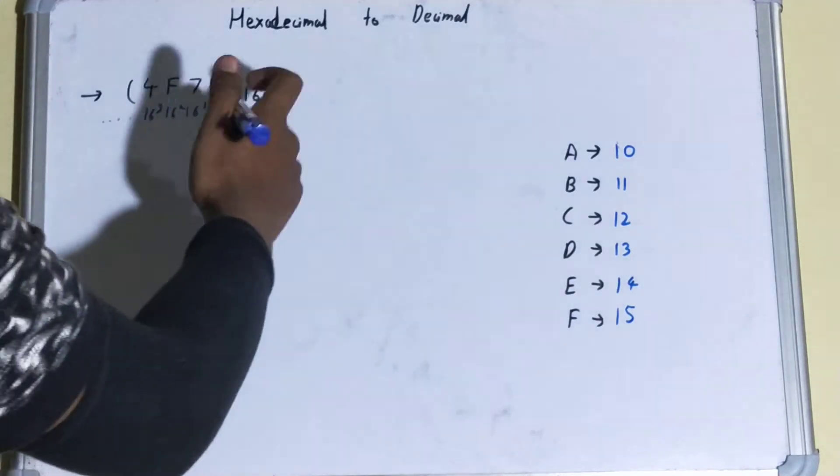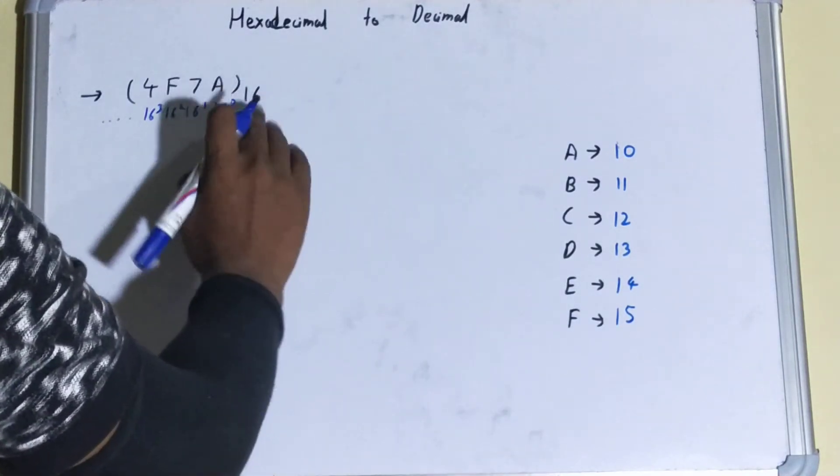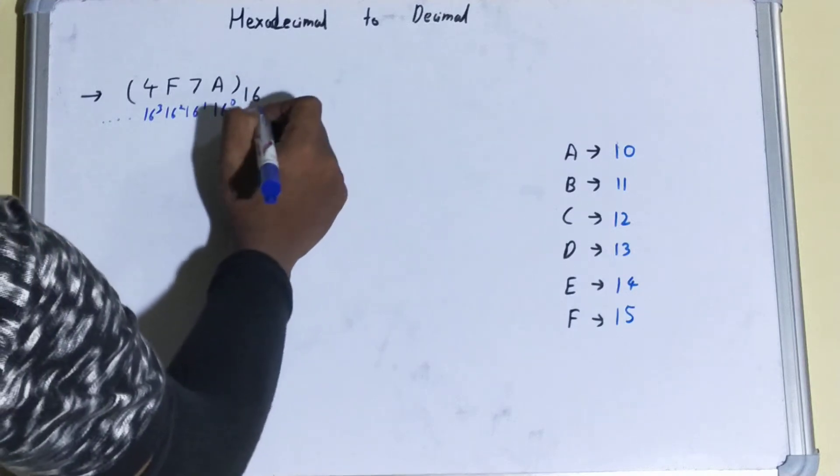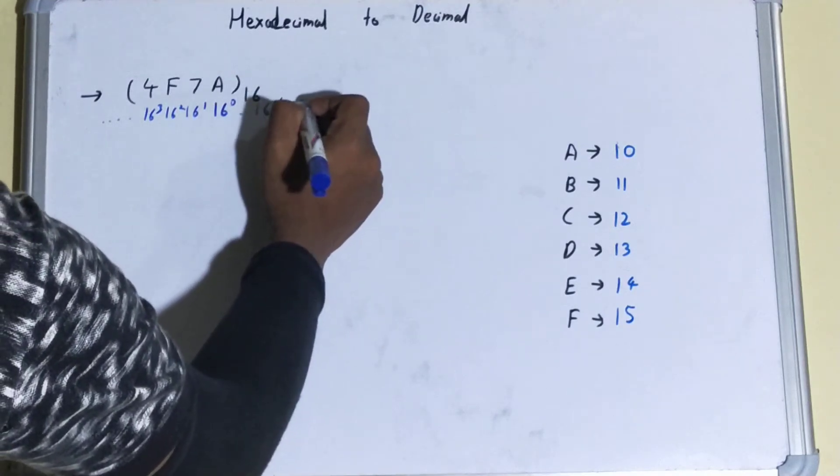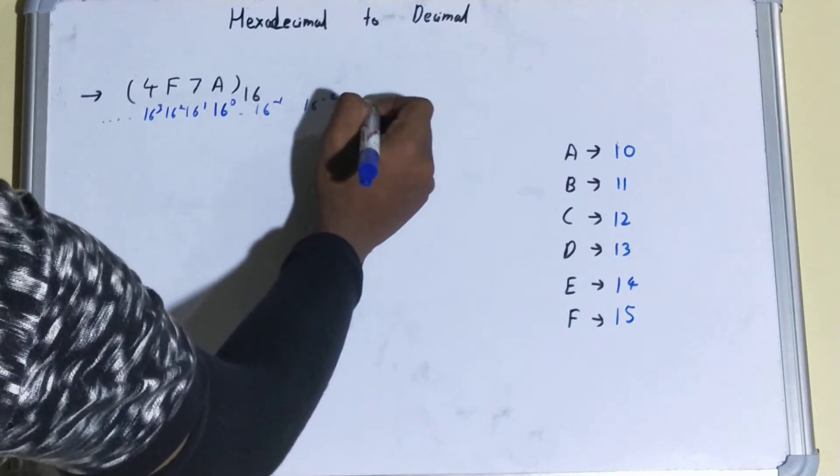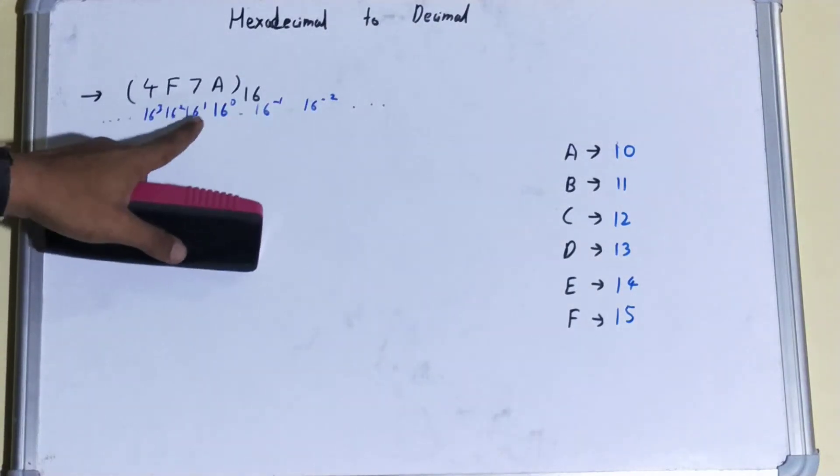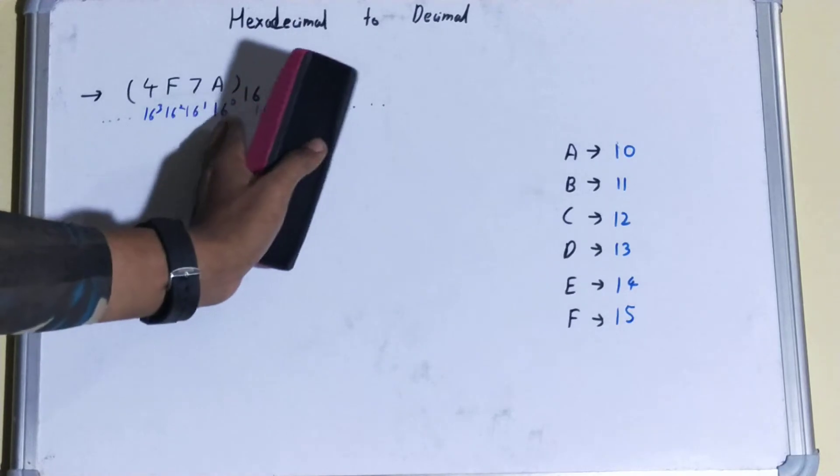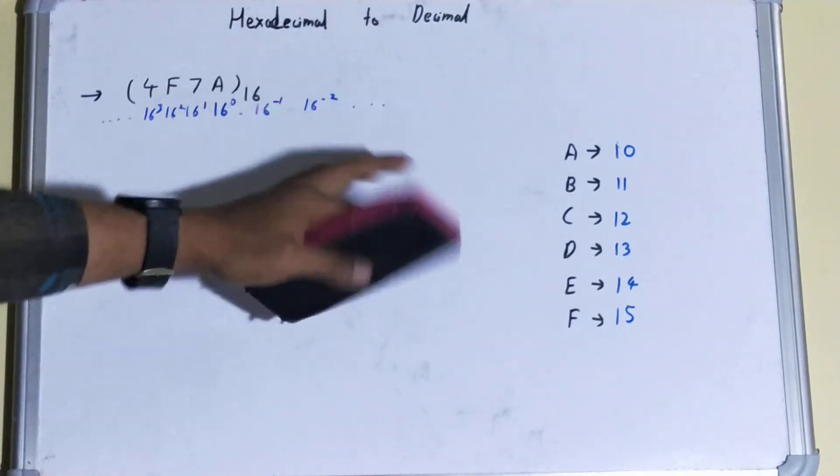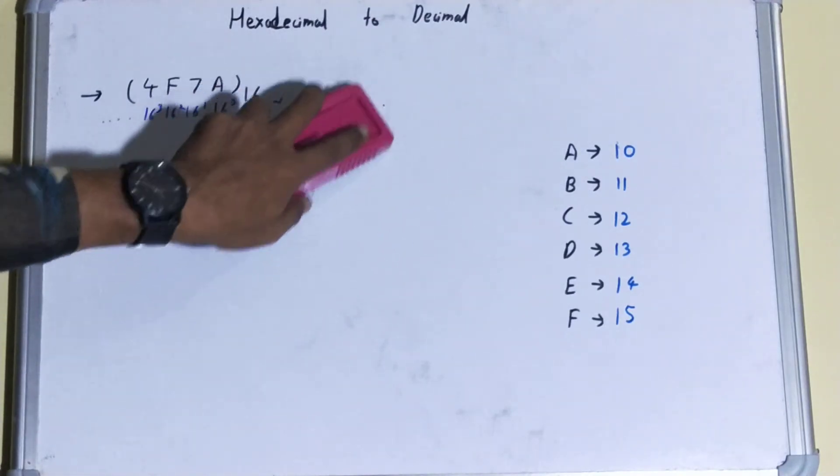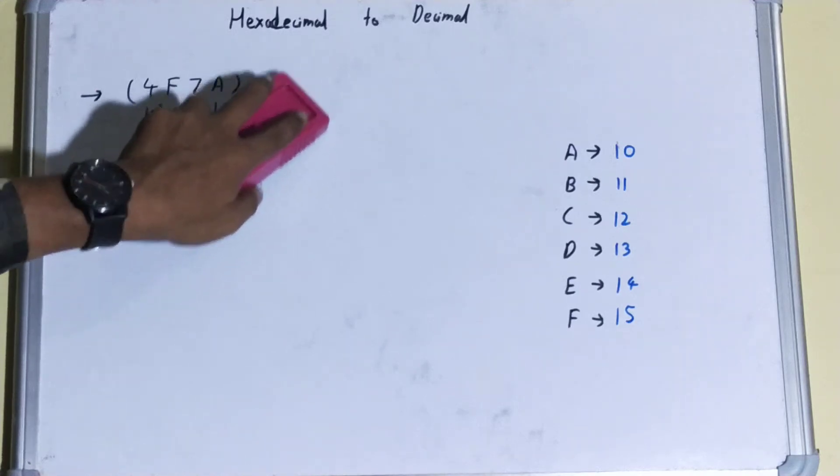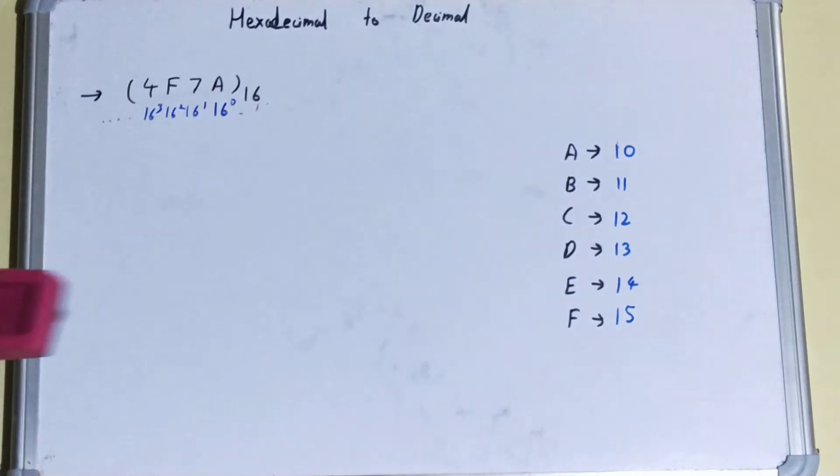And if there is a decimal number, then if you go this side then it will be 16 raised to power minus 1, 16 raised to power minus 2, and so on. If you are going this side then we will be increasing power, and if you are going that side, right side of the decimal, then we'll be decreasing the power.